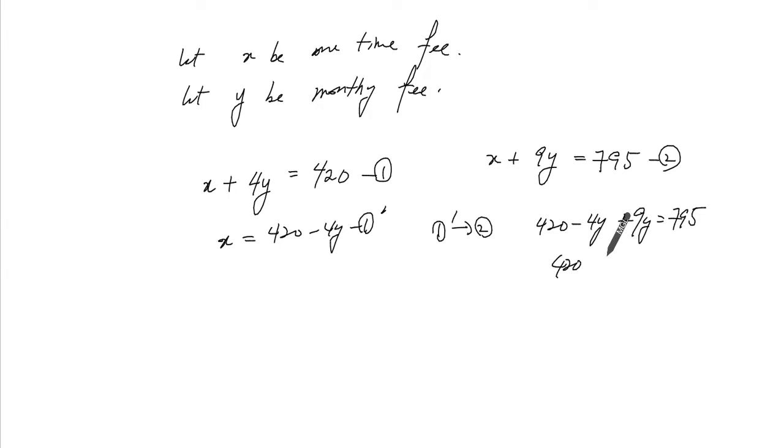So 420 minus 4Y plus 9Y equals 795. So if you subtract 420 you get 375 here. So 5Y equals 375. So Y is equal to $75.